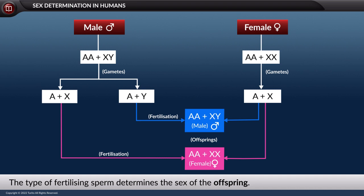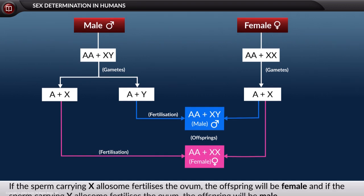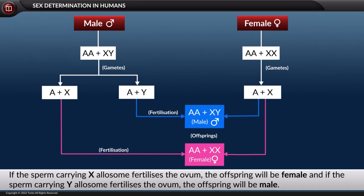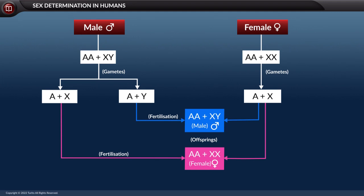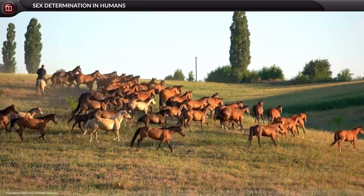From this we can understand that it is the type of fertilizing sperm that determines the sex of an organism. To emphasize: if the sperm carrying the X allosome fertilizes the ovum, the offspring will be female, and if the sperm carrying the Y allosome fertilizes the ovum, the offspring will be male. This is how sex in the case of humans is determined.